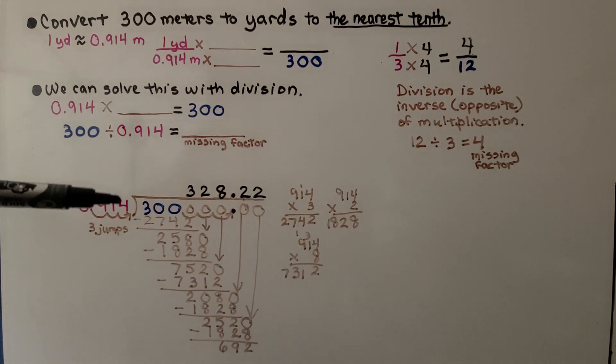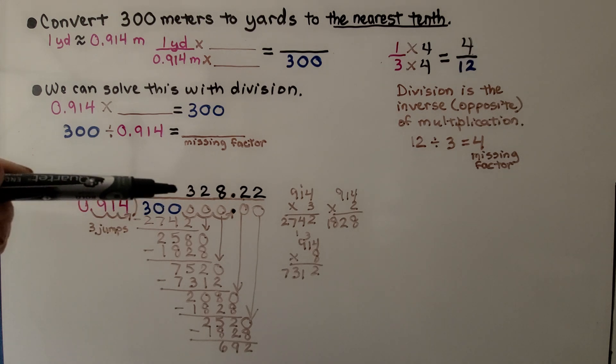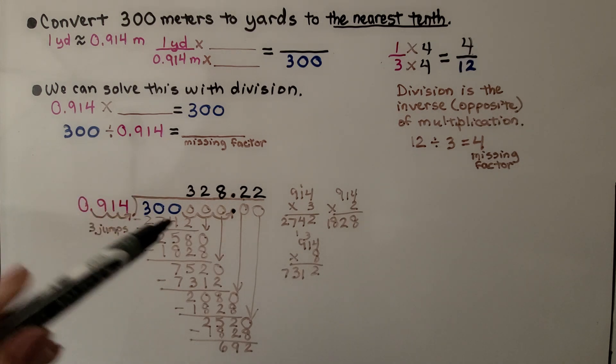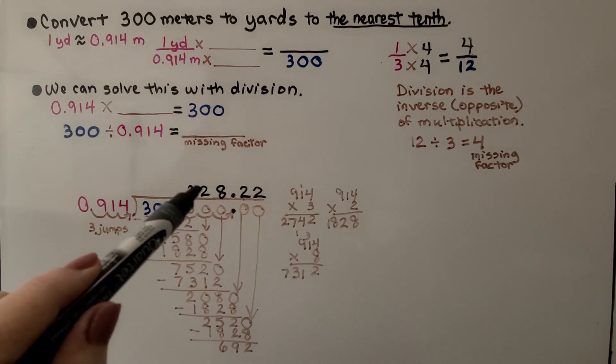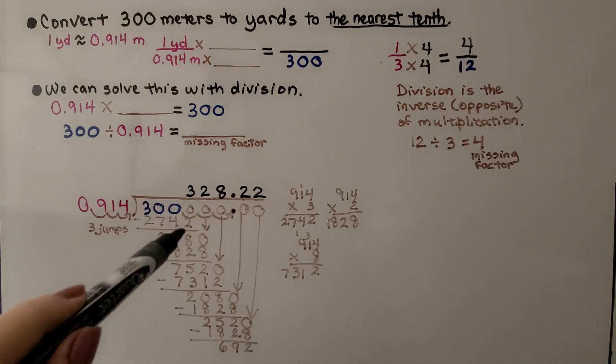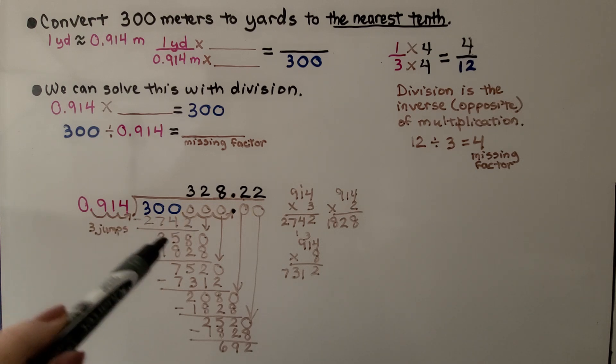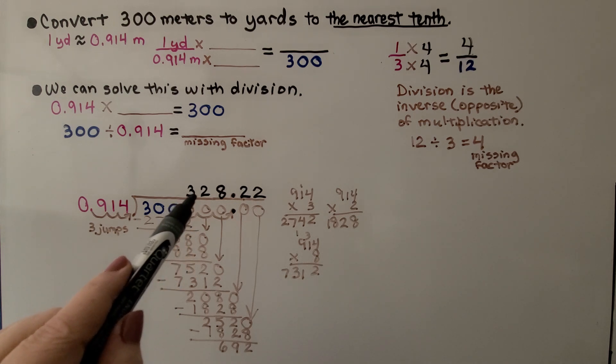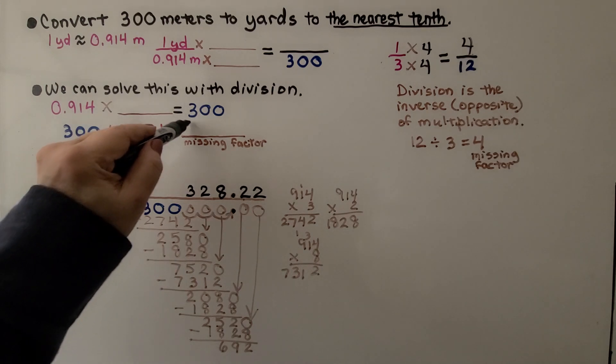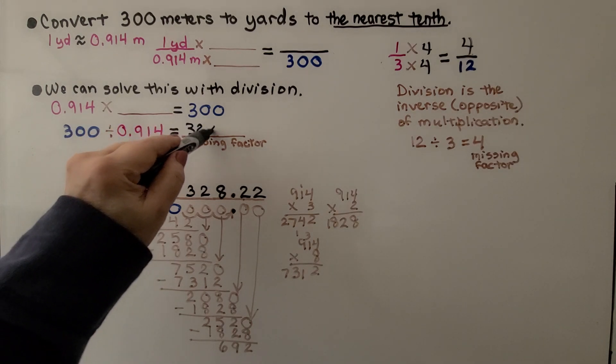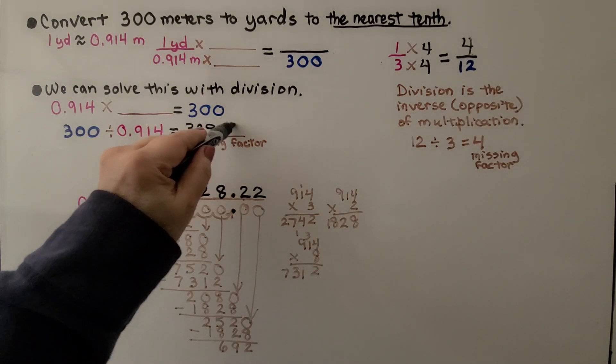And we find that we need to add some extra zeros to keep dividing. And we see how many times 914 can fit into 300. It can't, so there's nothing there. How many times can it fit into 3000? Well, that would be three times. So we put our three above that zero, and we start doing our subtraction, and we do a little multiplication on the side. And we find out that we have 328.22. That's our missing factor.